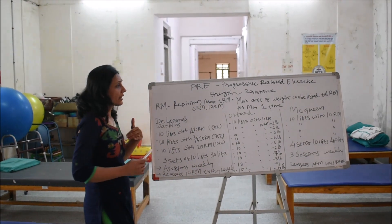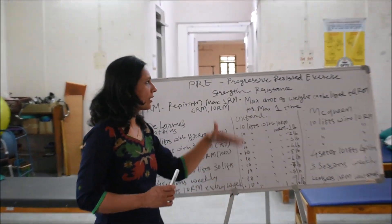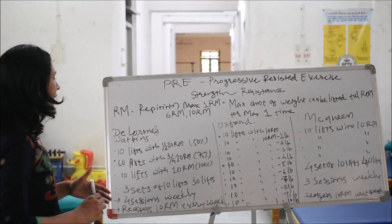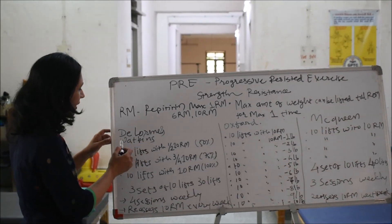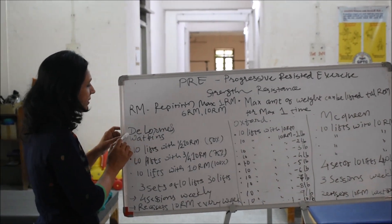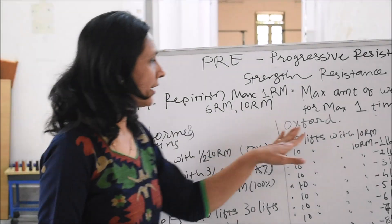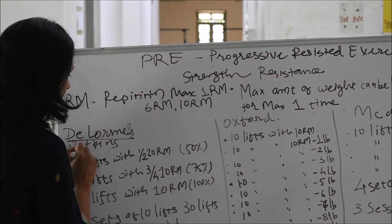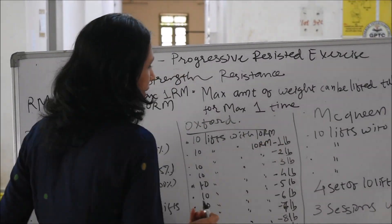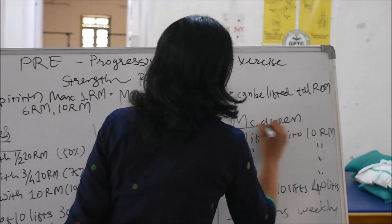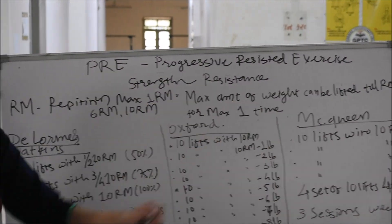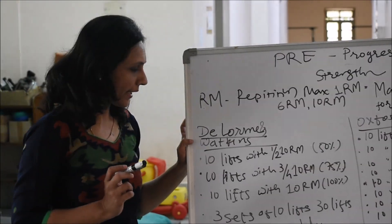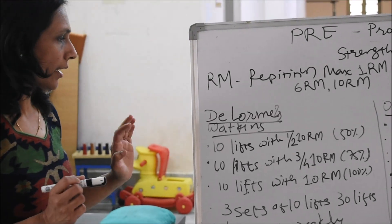There are different techniques by which progressive resistance exercise can be given. Mainly there are 3 techniques: first is the DeLorme and Watkins technique, second is the Oxford technique, and third is the MacQueen technique.